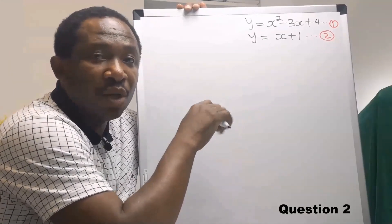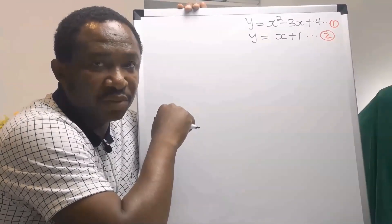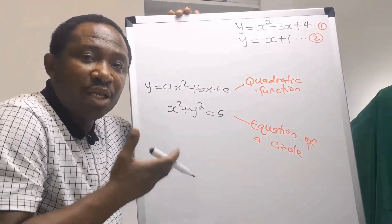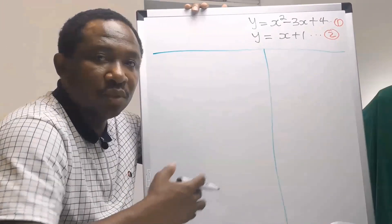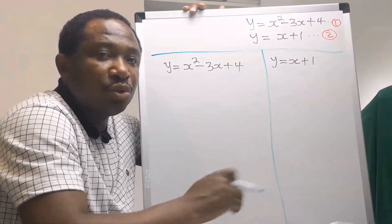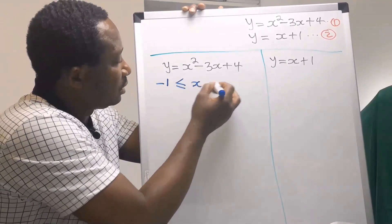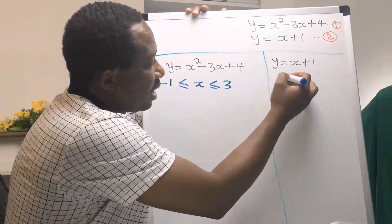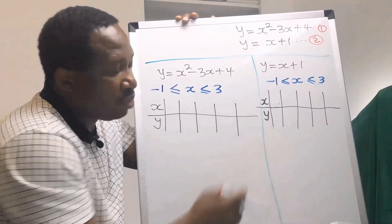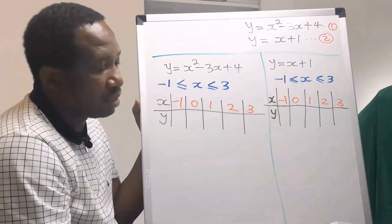In this problem we can use substitution method. However, the aim in this video is to learn graphical method. For quadratic functions or equations of a circle, we can only apply substitution method or graphical method. To apply graphical method, we separate the two equations, then choose a range of values — here, from minus 1 to 3 for both equations — and draw a table for each.